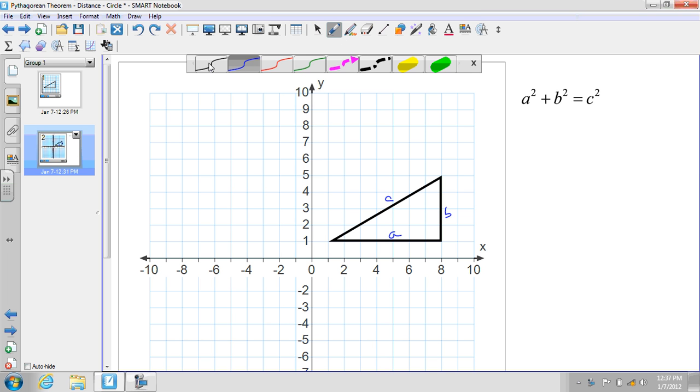And up in the corner here I have a squared plus b squared equals c squared. I have the Pythagorean theorem.